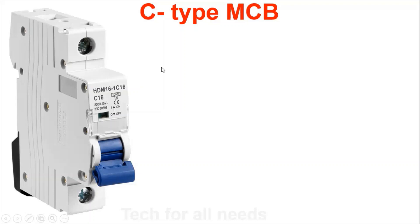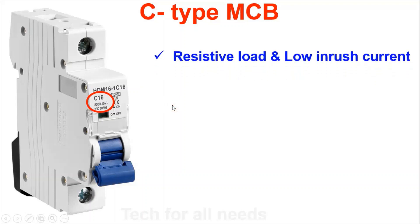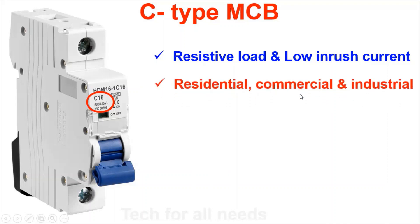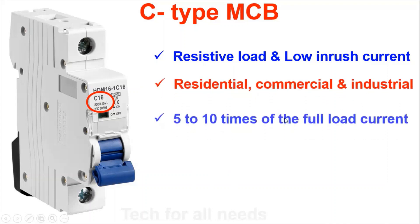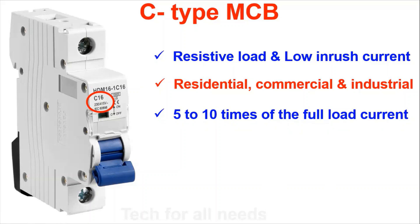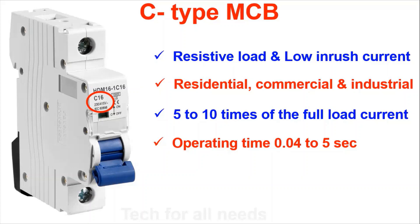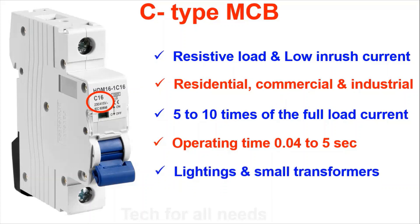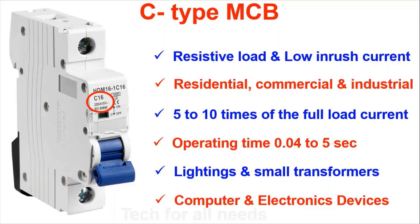C type MCB is used for low inrush current applications — residential, commercial, and industrial. Operating time is 0.04 to 5 seconds. It is suitable for small transformers and computer electronic devices. C type is the most common type used between B type and C type.